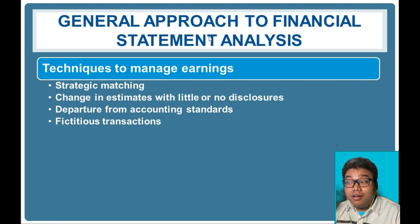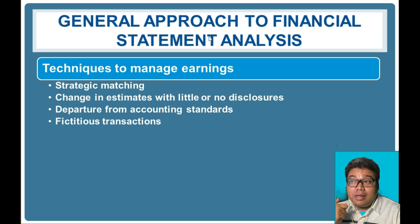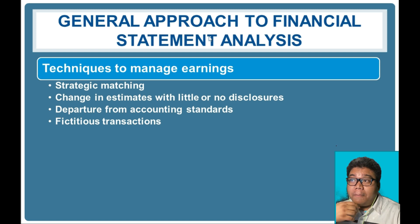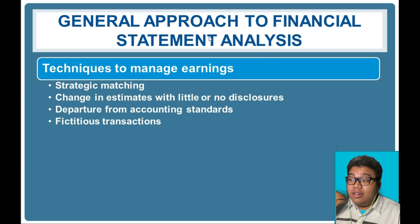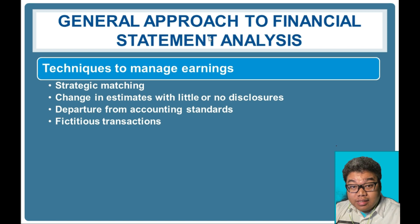Another technique is change in estimates with little or no disclosures. Accounting estimates are allowable based on standards, but certain estimates — such as depreciation method, useful life of an asset — are based on company judgment and management discretion. One way to manage earnings is to either increase or decrease the depreciation charge for the period.